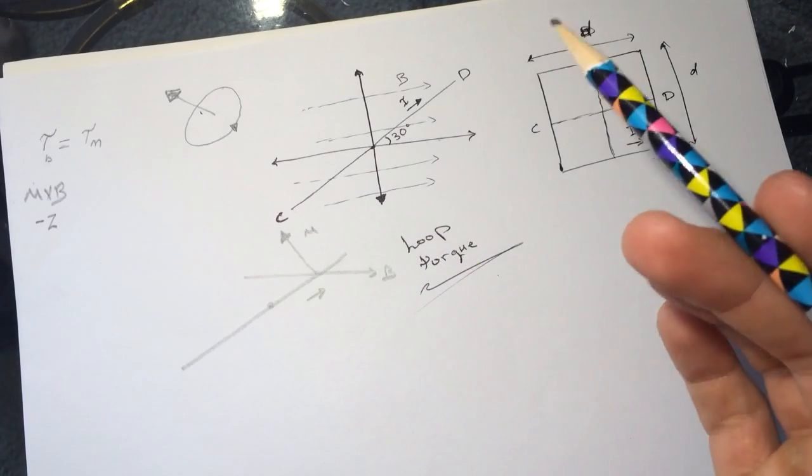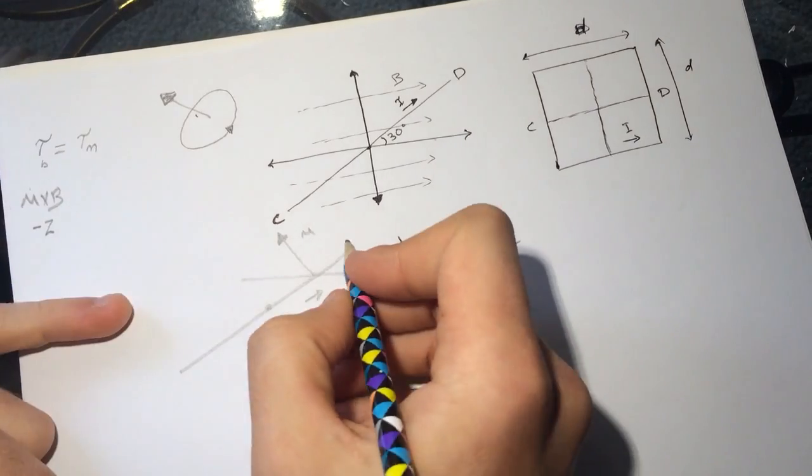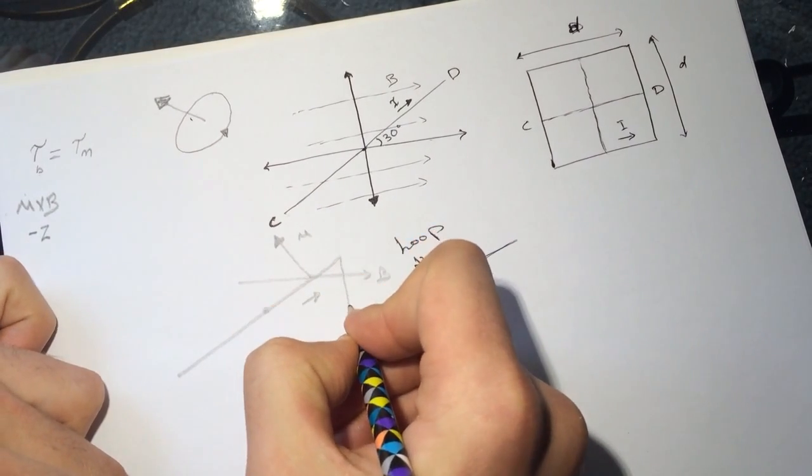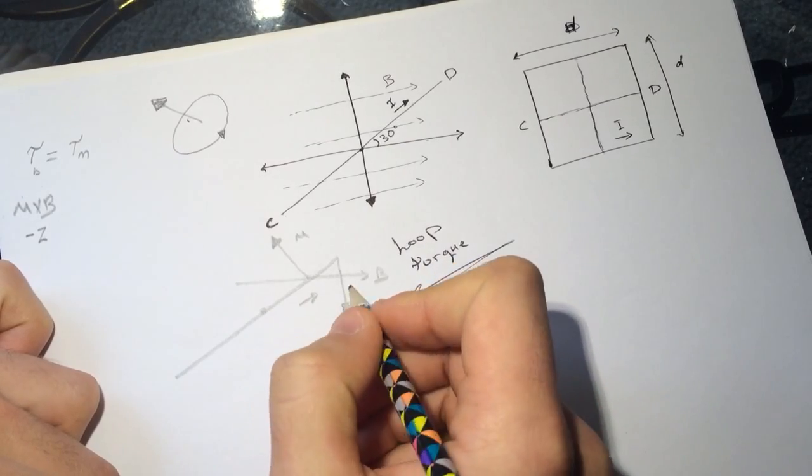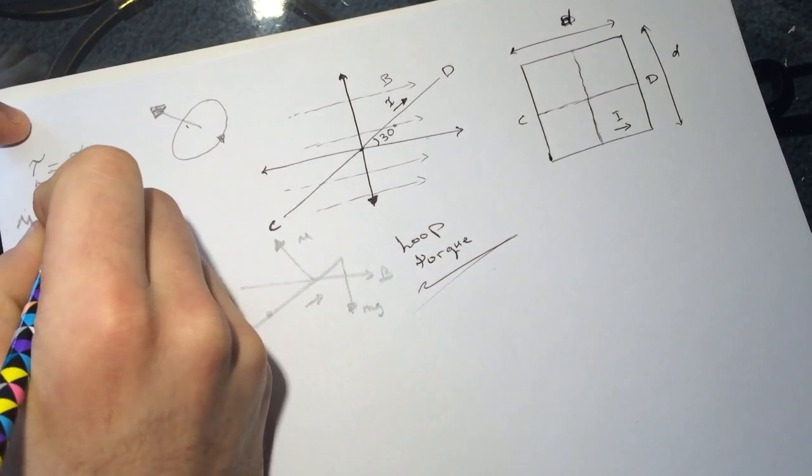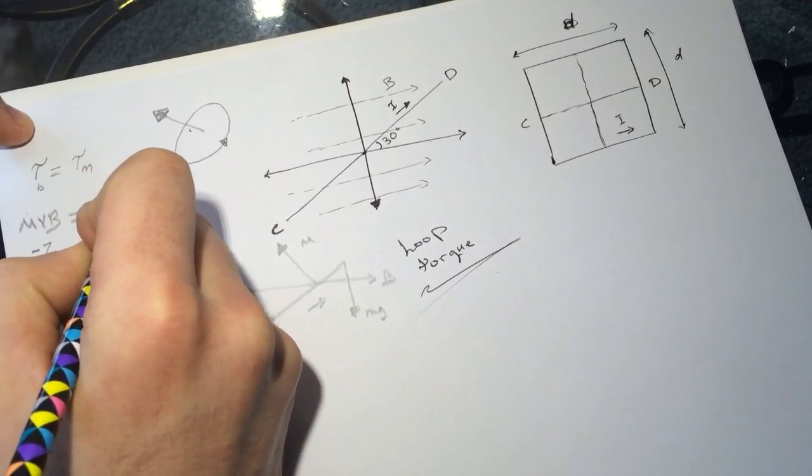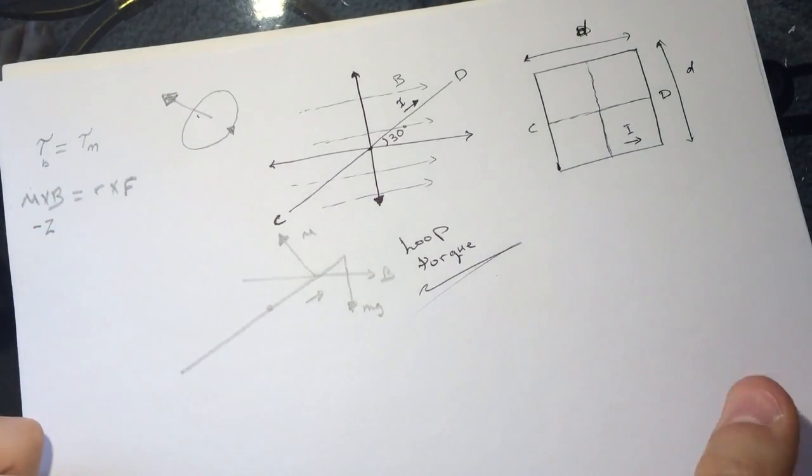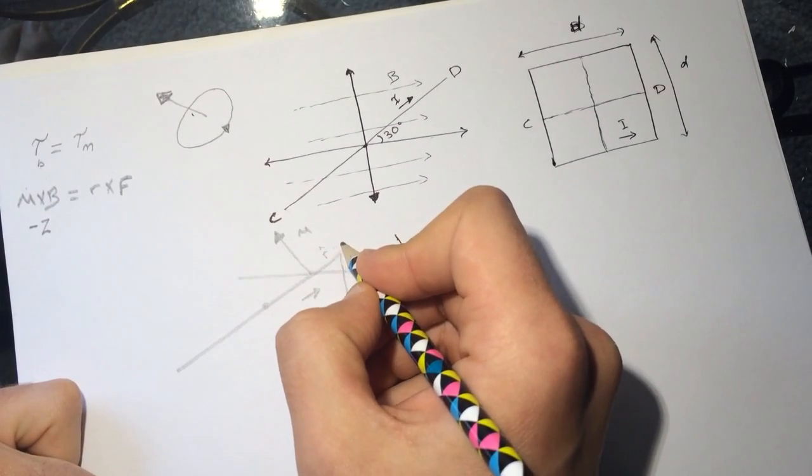If we said that the mass will be here, this is mg, and the torque from the mass will be R cross F, the lever arm. The R is pointing this way, so R cross F - F is going down, so R cross F is going to negative Z, which we don't want.